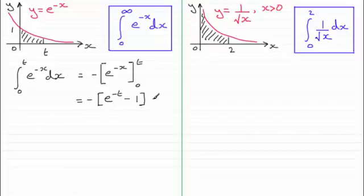So we've got that. And if I just simplify this, we've got negative, negative 1. So that's just going to be plus 1. And then we've got minus e to the power minus t. Remember, e to the power minus t is the same as 1 all divided by e to the power t.